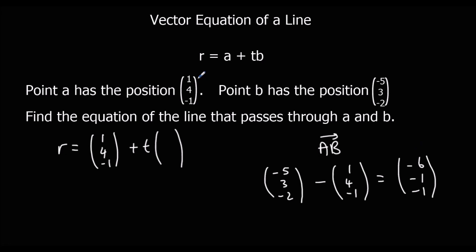So to go from a to b it's down 6, down 1, down 1. So (-6, -1, -1), and that is the equation of the line that passes through a and b.